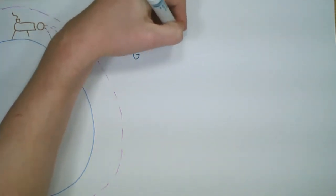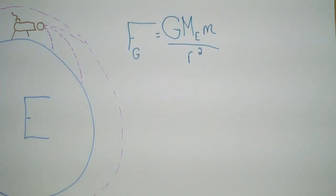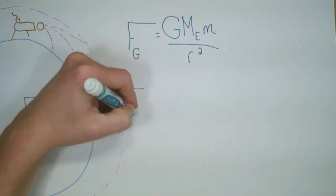Using Newton's Law of Universal Gravitation, which says that the gravitational constant multiplied by the mass of the Earth times the mass of the object over R squared gives us the force of gravity,